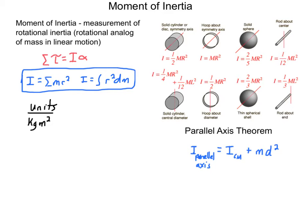Instead, we have to talk about something called moment of inertia. Moment of inertia is a measurement of the rotational inertia of an object — how hard it is to get something going, and once it's already spinning, how much it wants to keep on going. If you want to think of it as the rotational version of mass, you can.